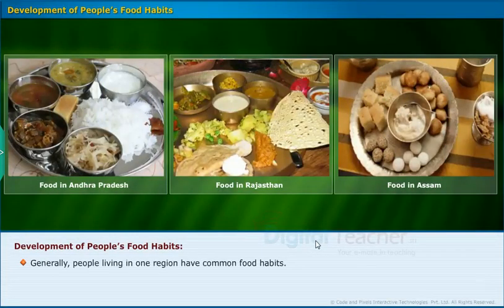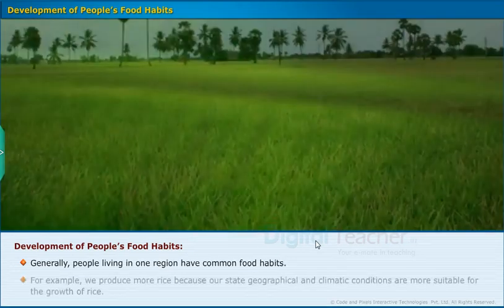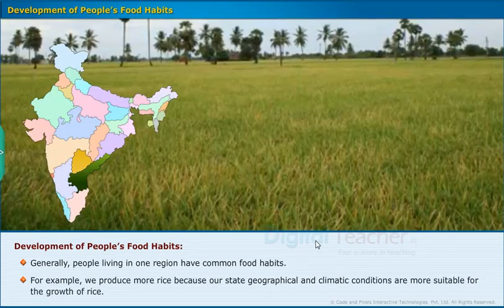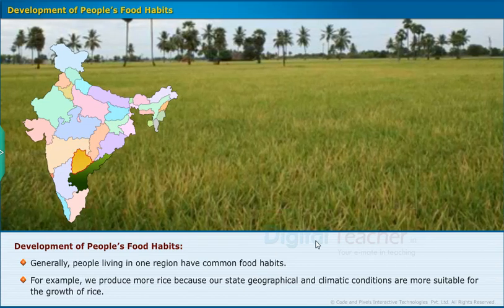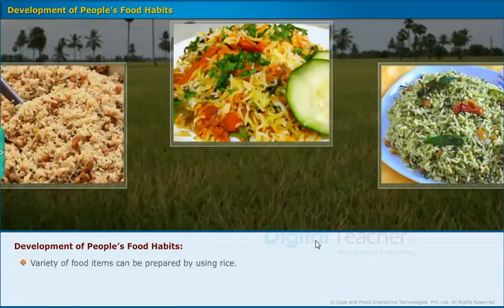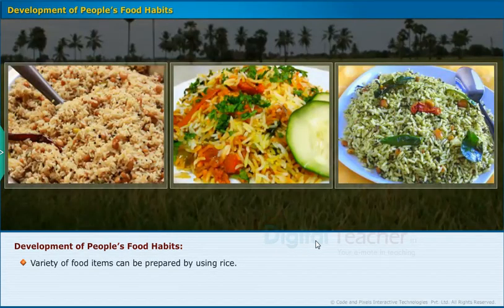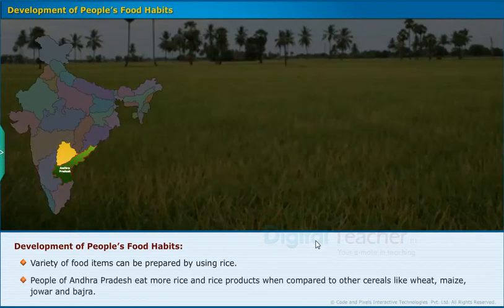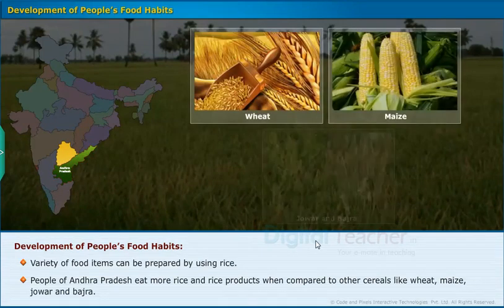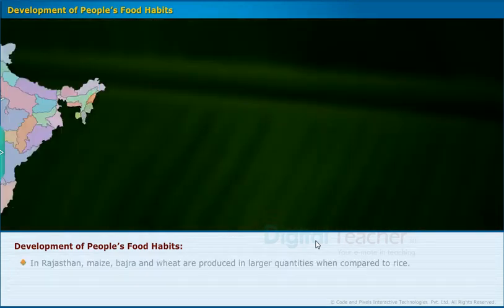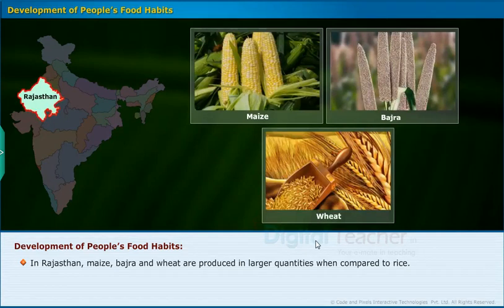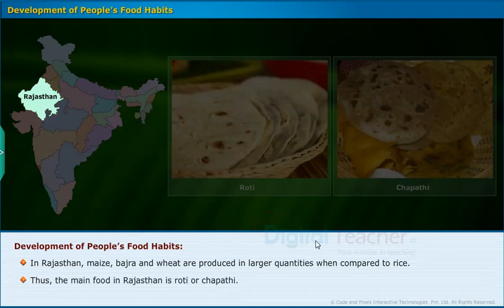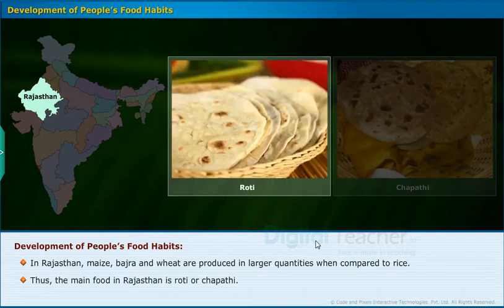Generally, people living in one region have common food habits. For example, we produce more rice because our state's geographical and climatic conditions are more suitable for the growth of rice. Variety of food items can be prepared by using rice. People of Andhra Pradesh eat more rice and rice products when compared to other cereals like wheat, maize, jowar, and bhajra. In Rajasthan, maize, bhajra and wheat are produced in larger quantities, so the main food there is roti or chapati.